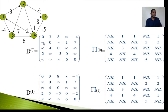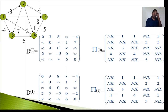We also construct the corresponding predecessor matrix π⁰. Diagonal entries (i,i) are nil. Entry (1,2) has predecessor 1 since there is a direct path of weight 3. Entry (1,3) has predecessor 1 with distance 8. Entry (1,4) is nil since no direct path. Entry (1,5) has predecessor 1. From vertex 2: (2,4) has predecessor 2 with weight 1; (2,5) has predecessor 2 with weight 7. From vertex 3: (3,2) has predecessor 3. Diagonal entries and entries with no path are nil.